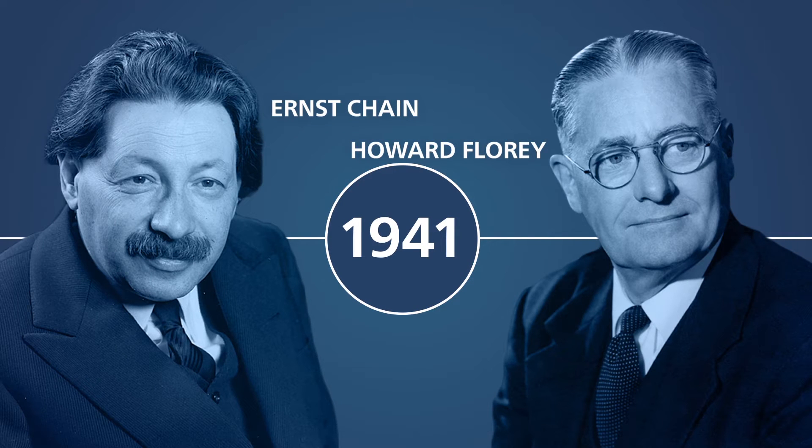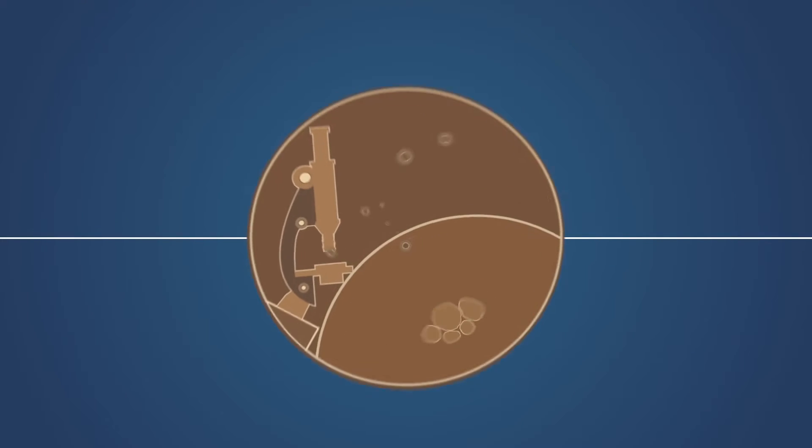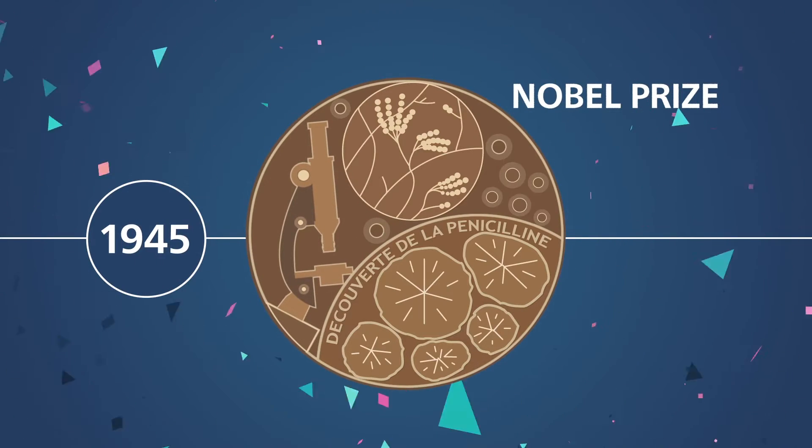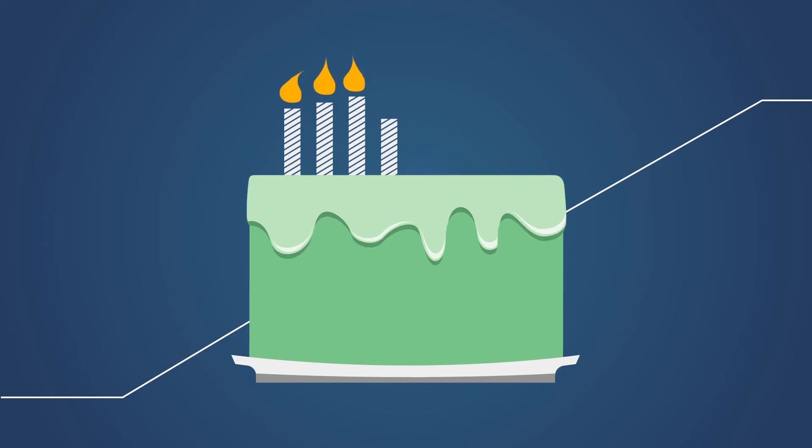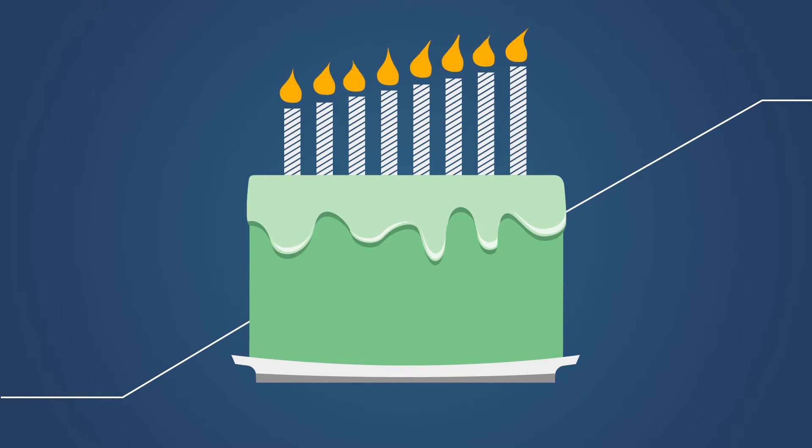Howard Flory and Ernst Chain analyze the biochemistry, prove its efficacy, and together they deliver penicillin as a medicine to the world. The effects are astonishing. In less than three decades, life expectancy jumps by a remarkable eight years.